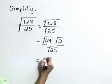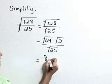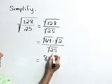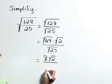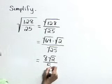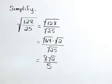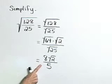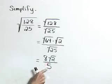Now the square root of 64 is 8 times the square root of 2. We can't clean that up any further. In the denominator, the square root of 25 is 5. So our simplified form is 8 times the square root of 2 all over 5.